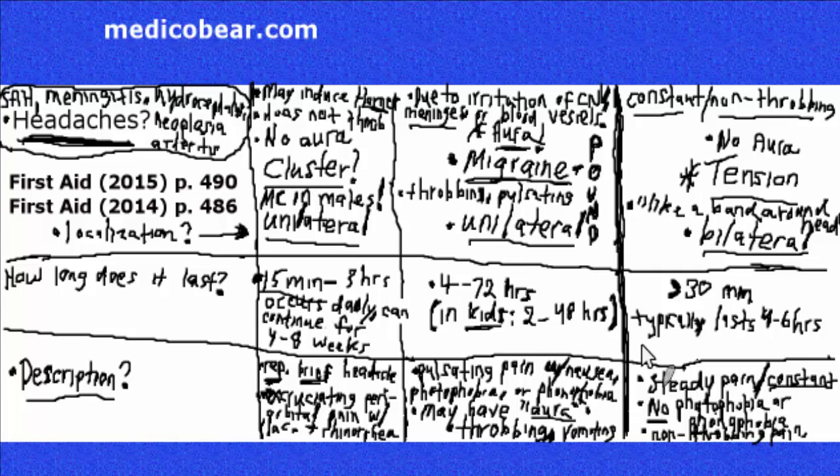Don't forget that we treat the cluster headache with inhaled oxygen or sumatriptan. You're going to treat the migraine with abortive therapies like tryptans, which are basically serotonin agonists acting at the postsynaptic serotonin receptor. They stimulate the postsynaptic serotonin receptor. You can also use NSAIDs, propranolol, topiramate, calcium channel blockers, amitriptyline.